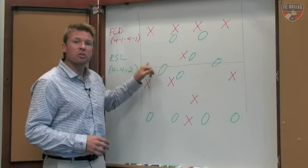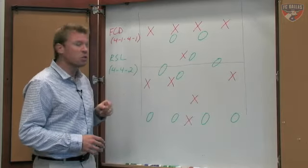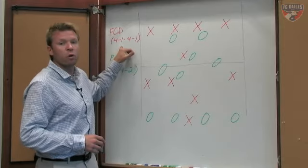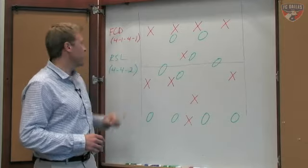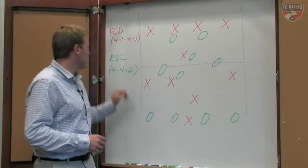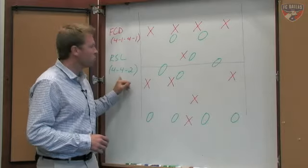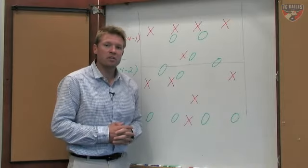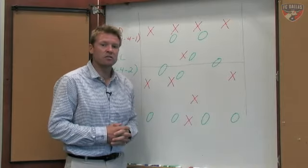So, Saturday night at the Rio Tinto in leg number two between these two sides, I expect to see FC Dallas line up in a 4-1-4-1 formation again and I also expect that Real Salt Lake will line up in their familiar 4-4-2 with that diamond midfield. Now I want to give you my three keys to the game and keys to success for FC Dallas.